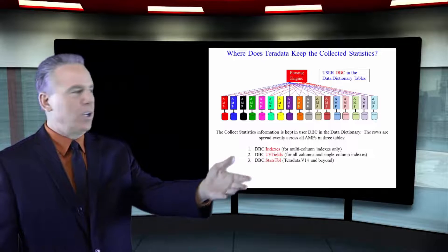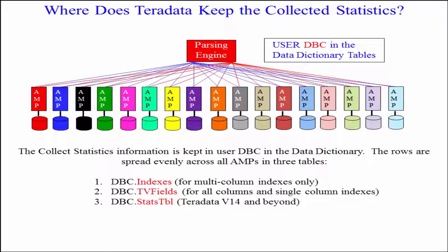Now, where's it kept? Three different places. DBC.Indexes—they're going to store all multi-column index statistics there.